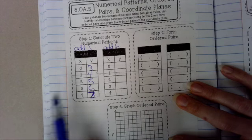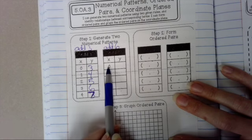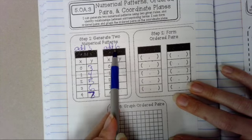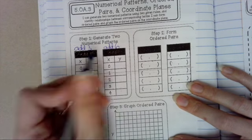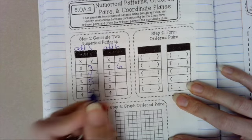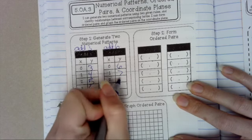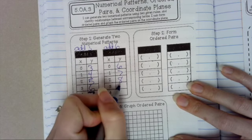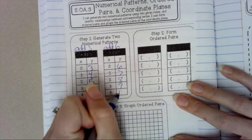Now we're going to take the X coordinate, but this time our pattern is add 6. So 0 plus 6, 6. 1 plus 6, 7. 2 plus 6, 8. 3 plus 6, 9. And 4 plus 6, 10.